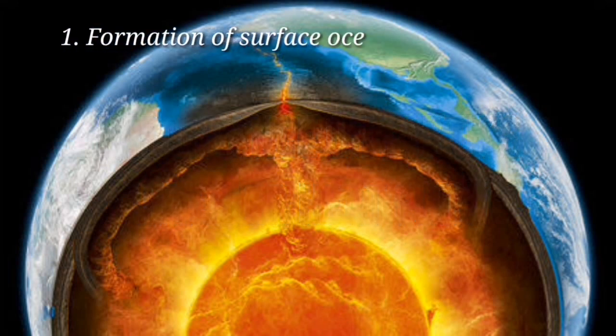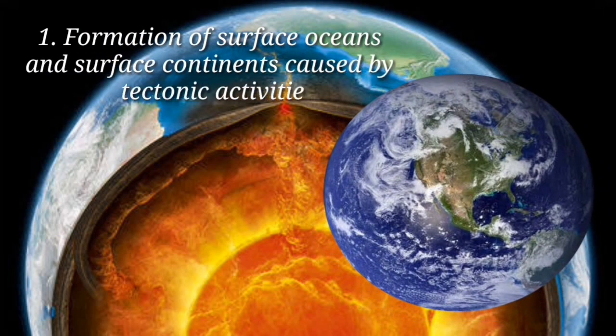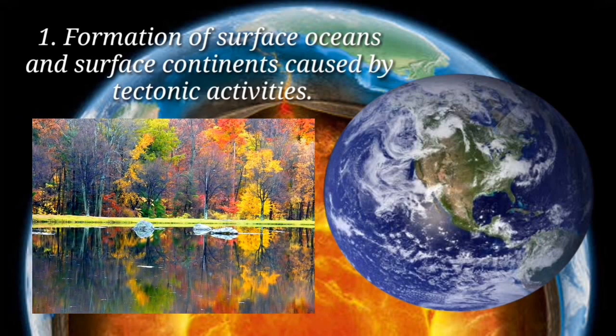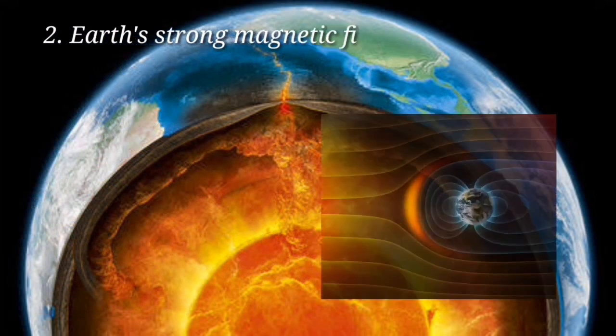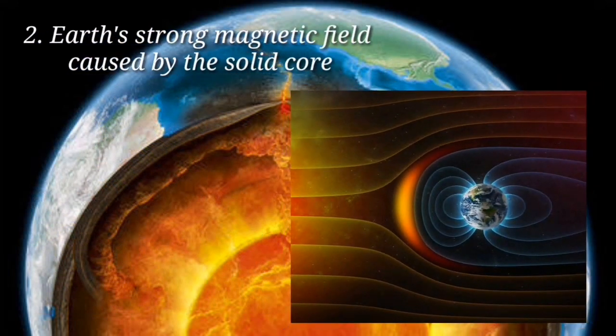First, the formation of surface oceans and surface continents caused by tectonic activities. Because of convection in the Earth's mantle, tectonic plates in Earth's crust are able to move, creating both surface oceans and surface continents. The combination of oceans and continents established the biogeochemical cycles that allowed Earth's surface temperature to be sustained at an optimal level for life, in spite of the ongoing brightening of the sun.